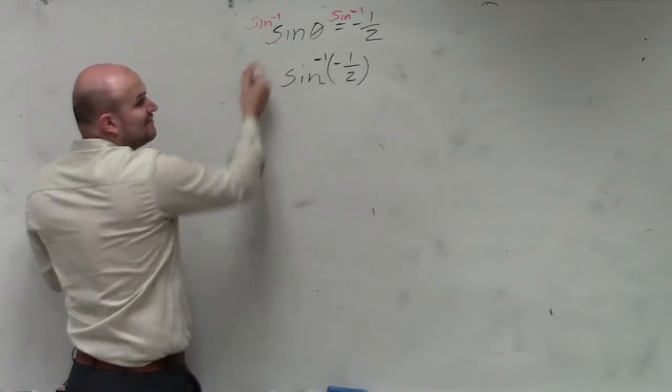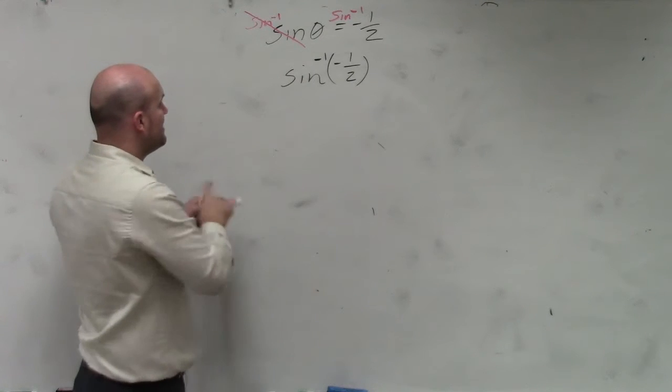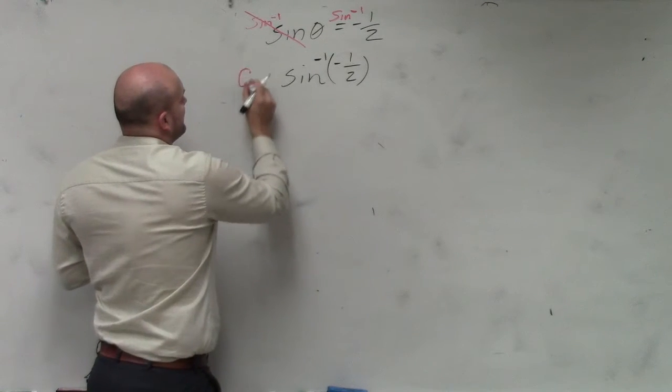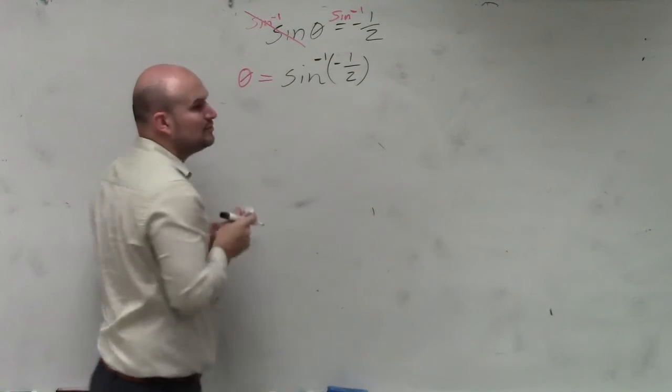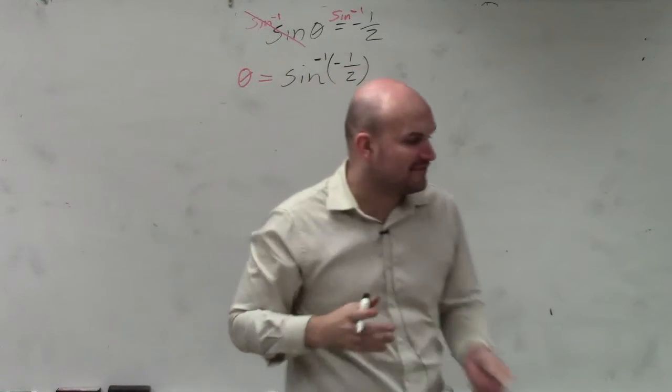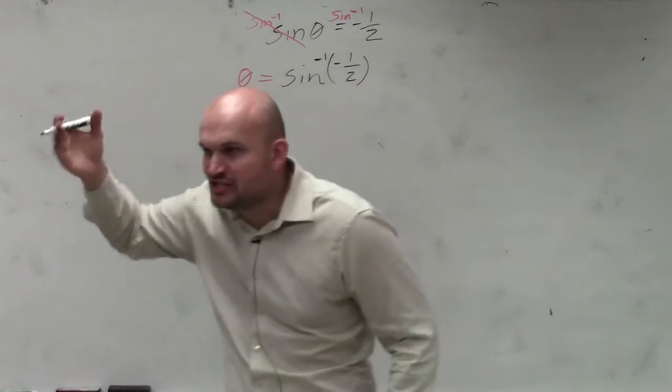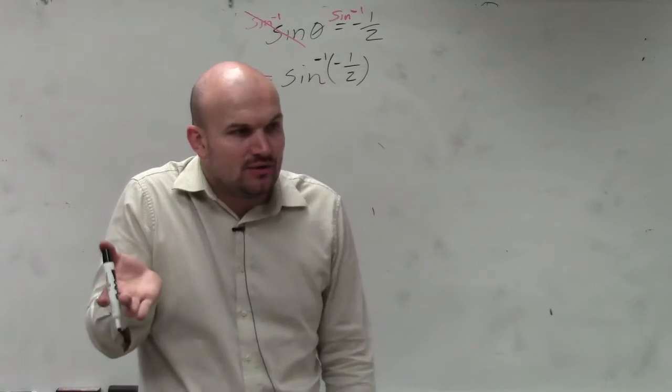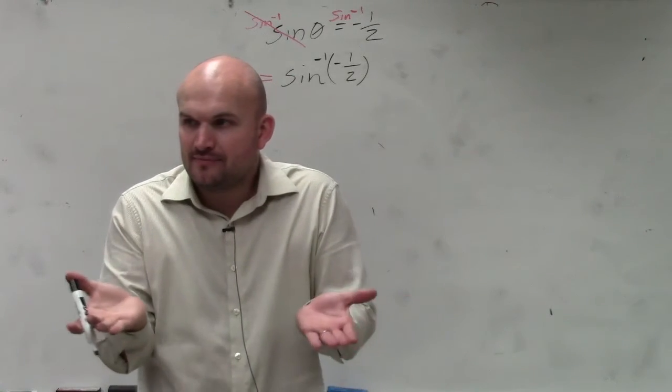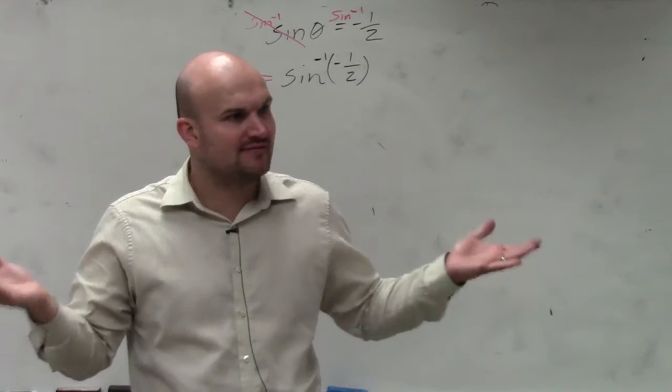So sine inverse of sine, those undo each other. And basically, what we have here is theta is equal to the sine inverse of negative 1 half. So in reality, what this question is asking you is what is the angle where the sine is equal to negative 1 half? What is the angle that produces the sine of negative 1 half?